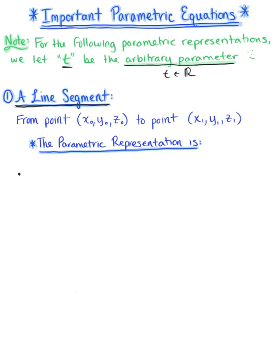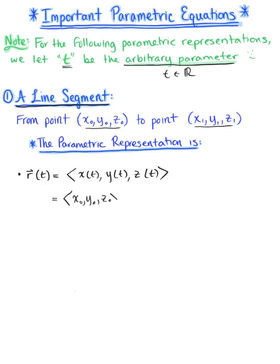We have a line segment from point (x₀, y₀, z₀) to a point (x₁, y₁, z₁). The vector-valued function is a vector with components x(t), y(t), z(t). Using this, we have our fixed point defined by the position vector (x₀, y₀, z₀), plus the arbitrary parameter t multiplied by the parallel vector (x₁−x₀, y₁−y₀, z₁−z₀), such that t is greater than or equal to 0 and less than or equal to 1.